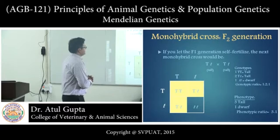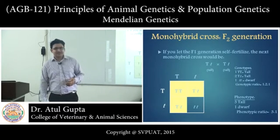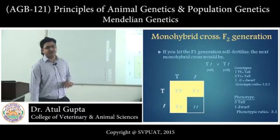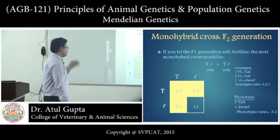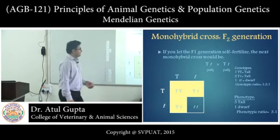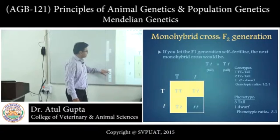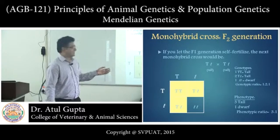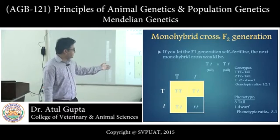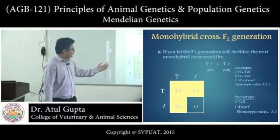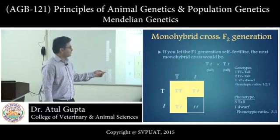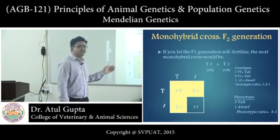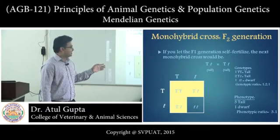When we allow these F1 plants to self-fertilize, the next monohybrid cross would be capital T small t crossing capital T small t — a tall heterozygous plant crossing a tall heterozygous plant. In the F2 generation, using a checkerboard, out of four offspring three are tall and one is dwarf. The genotypic ratio is 1:2:1 but the phenotypic ratio is 3:1.